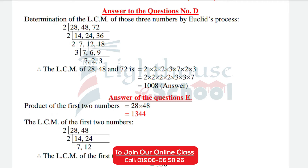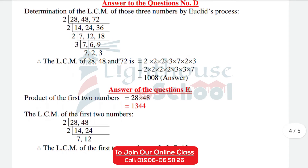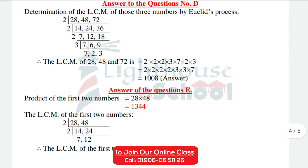Dividing by 2: we get 14, 24, 36. Dividing again by 2: we get 7, 12, 18. Dividing again by 2: we get 6 and 18. Dividing by 2: we get 9. Next, 6 and 9 — dividing by 3: we get 3, 2, 6, 3, 3, 9. This gives us the LCM.